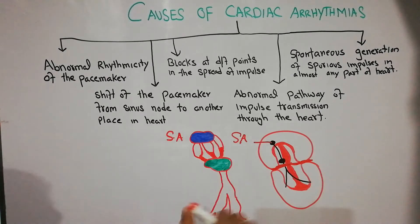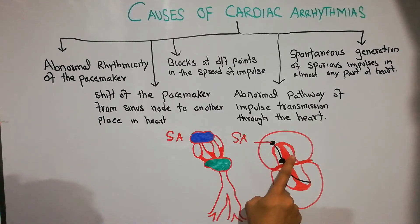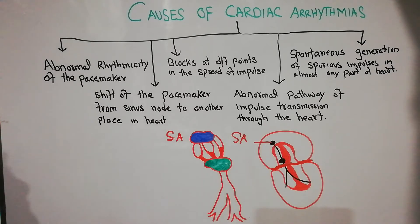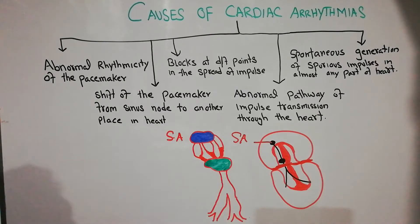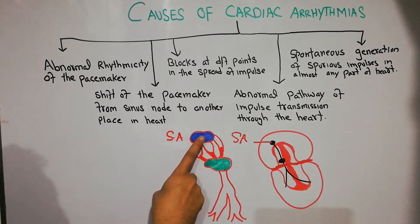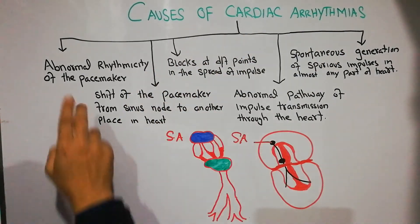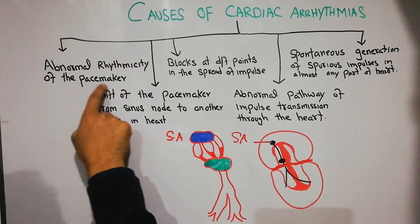Looking at the heart diagram, we have the right atrium and left atrium, with the septum between them, and the right and left ventricles with the interventricular septum. The SA node is situated here and determines the pace of the heart. If any abnormality occurs in this pacemaker, it will lead to arrhythmias — that is the first cause of cardiac arrhythmias.